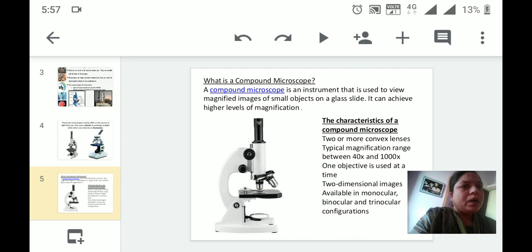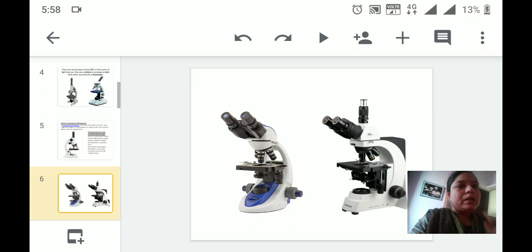Typical magnification range is between 40x to 1000x. One objective is used at a time. Two-dimensional images are available in monocular, binocular, and trinocular configuration. Monocular means it is having only one eyepiece. In this diagram you can see this microscope is having two eyepieces at the top. In the next diagram, you can see three eyepieces.